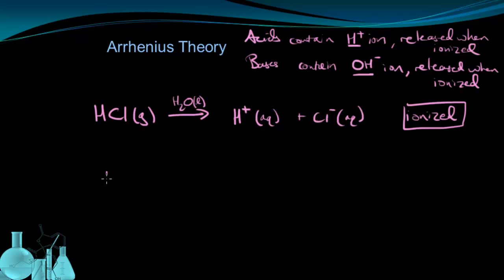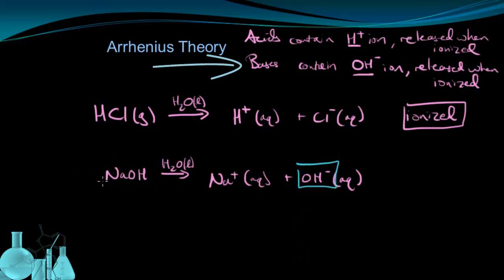I can also show this with a base. If we take sodium hydroxide and we dissolve it in water, we're going to get the sodium ion and the hydroxide ion. So because it releases the hydroxide ion when ionized, that makes sodium hydroxide a base. Just like HCl releasing the H+ ion when it ionizes makes it an acid, according to Arrhenius.